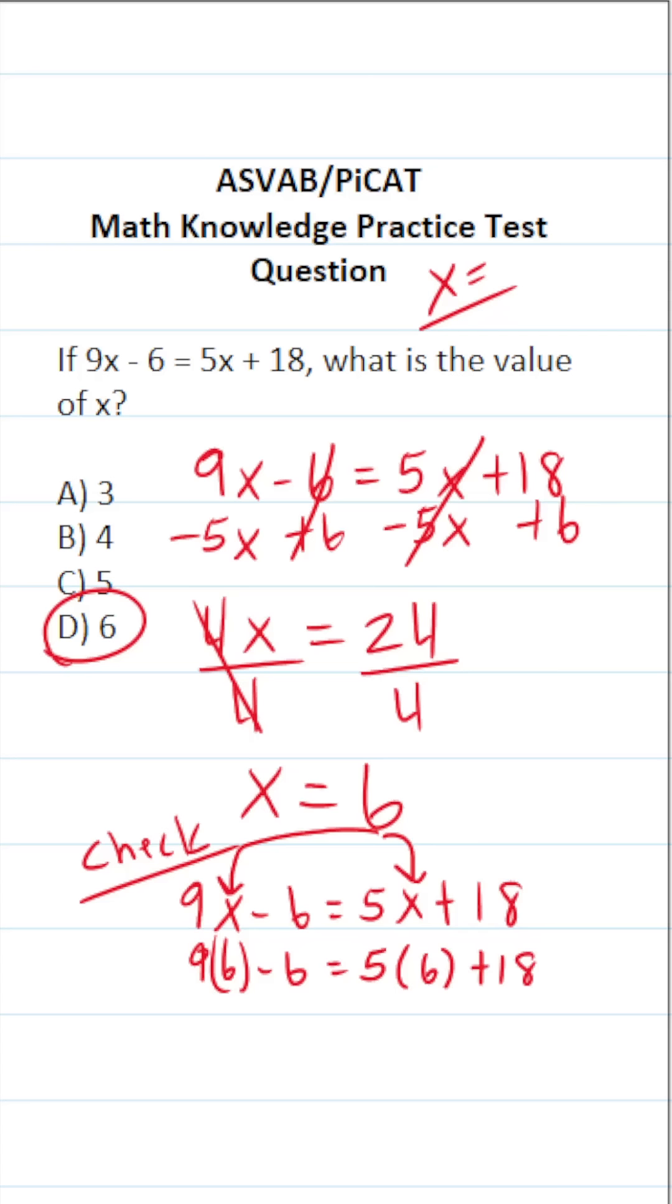9 times 6 is 54 minus 6 equals 5 times 6, which is 30 plus 18. 54 minus 6 is going to be 48. 30 plus 18 is 48. Since this is a true statement that is 48 equals 48, I'm confident that 6 is the correct solution to this equation.